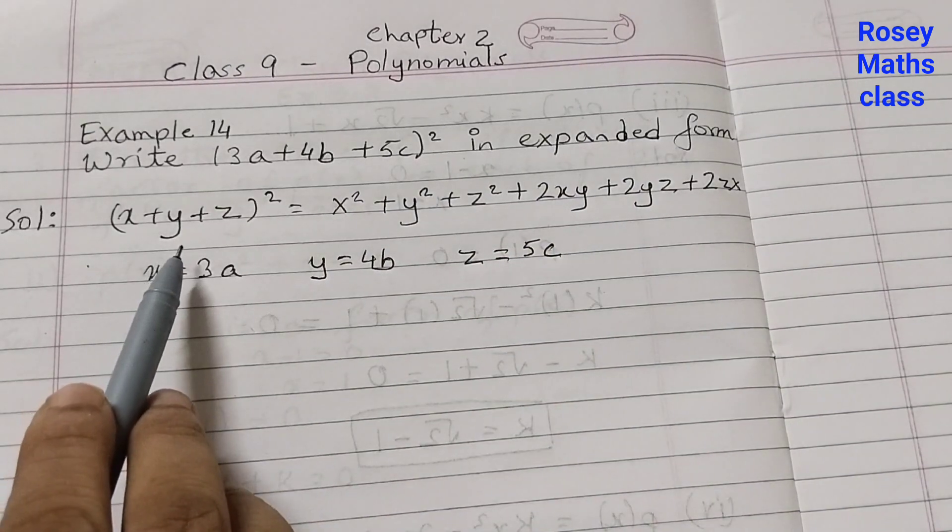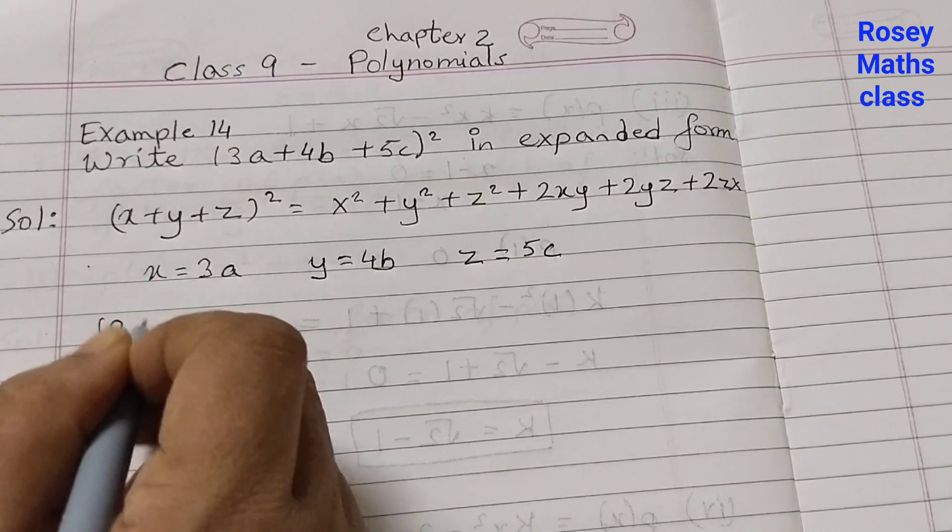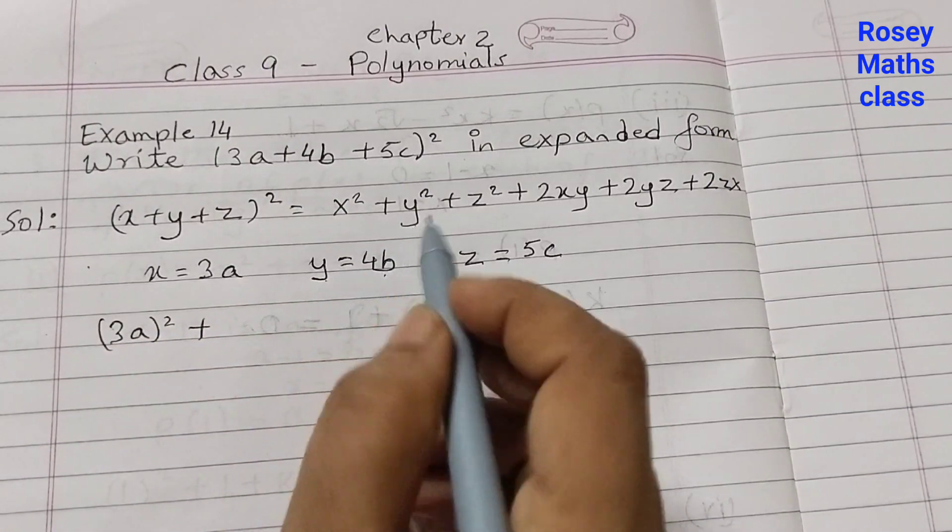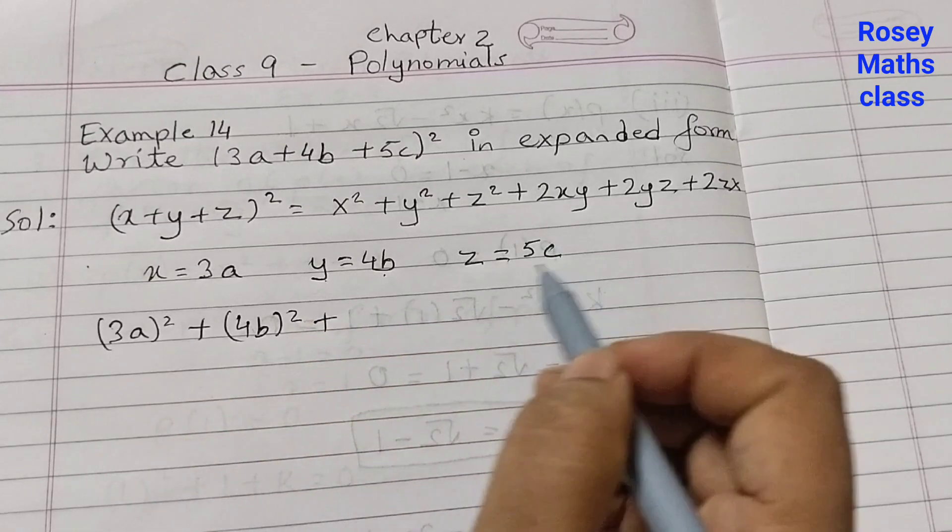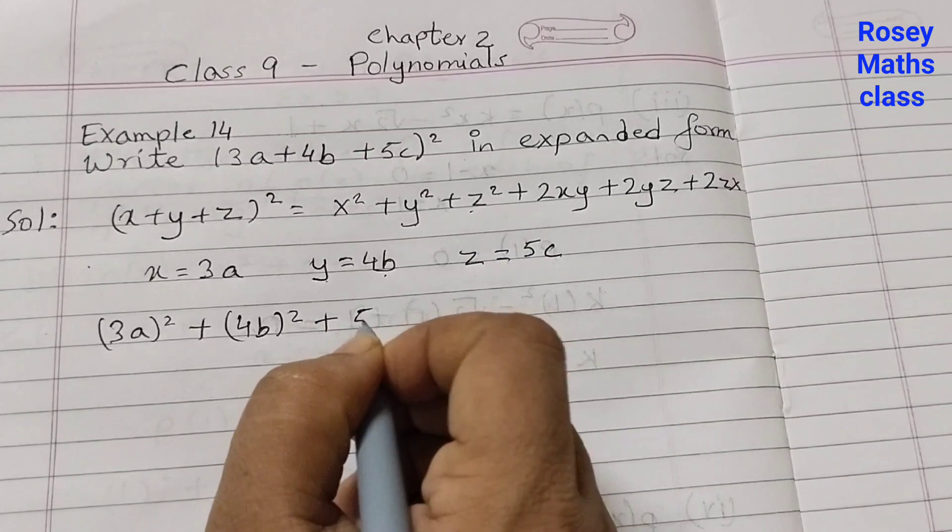Therefore, using this identity, we have (3a)² plus (4b)² plus (5c)².